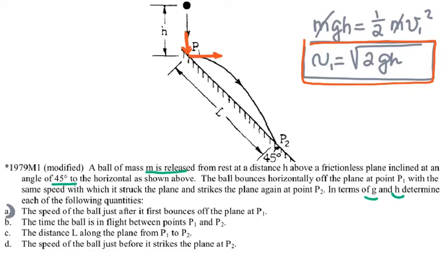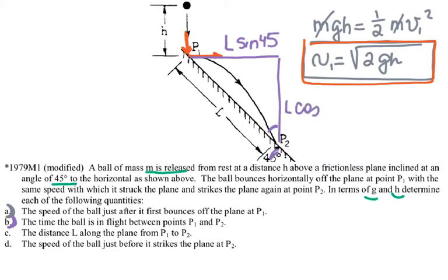For part B, we need the time the ball is in flight between P1 and P2. Because the angle is 45 degrees, the ball travels the same horizontal distance and vertical distance. The incline segment L has components L cosine 45 and L sine 45, which are equal — so I can call both of them the same distance D.